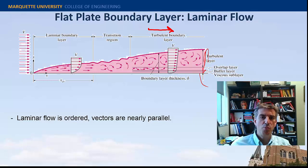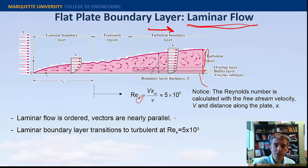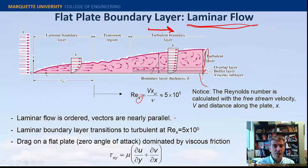We'll talk more about that later, but here we're going to focus just on laminar flow. It's ordered and its vectors are nearly parallel. The laminar boundary layer transitions at around a Reynolds number of half a million, calculated using the position along the plate.